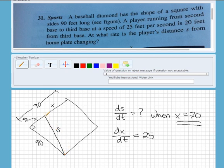They want the rate of the distance from home plate to where the runner is when the runner is 20 feet away from third base.